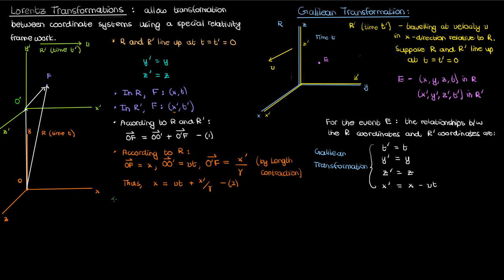Now let's talk about what everything looks like in the reference frame r'. The distance of in the reference frame r' is x divided by gamma, because r is moving relative to r', so we apply length contraction with proper length x. Meanwhile, o o' is v times t', using t' because that's the time measured by the clock in the reference frame r'. And finally, o'f is just x' by definition. Applying equation 1, we get the relationship for distances in the reference frame r', and I'll call this equation 3.